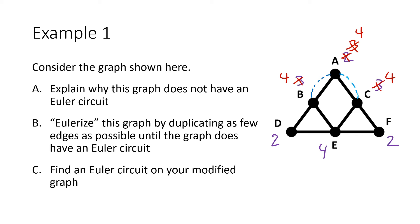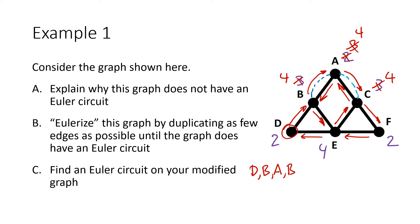Now we find an Euler circuit on this new graph. For example, start at D, go D to B, B up to A, A back to B, B to E, E up to C, E up to A, A back down to C, down to F, over to E, and back to D. Writing out the vertex list: D, B, A, B, E, C, A, C, F, E, D.